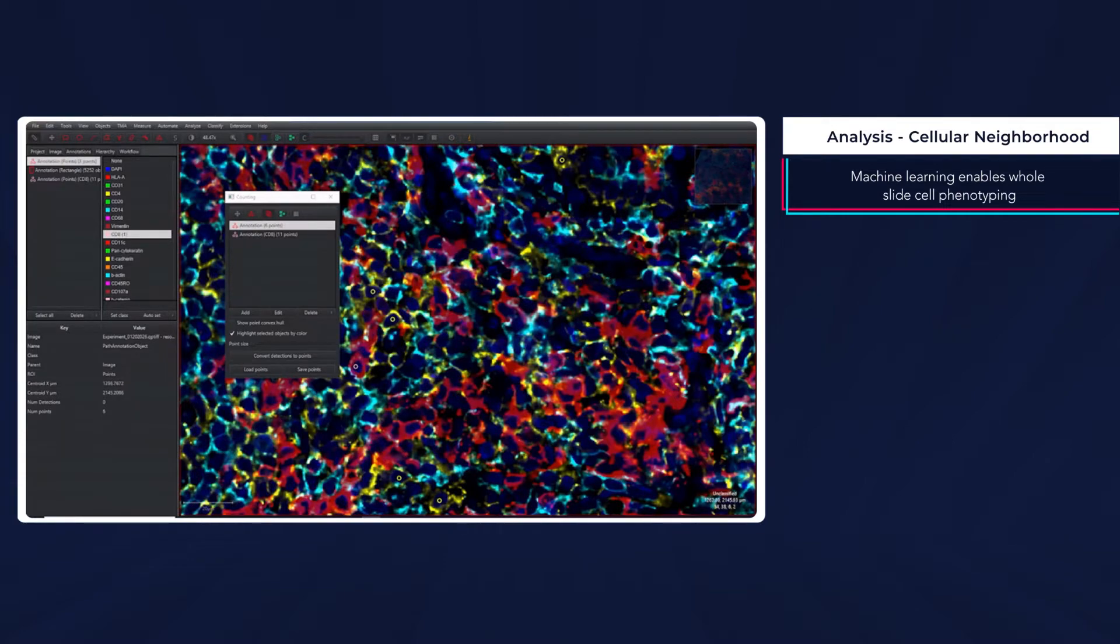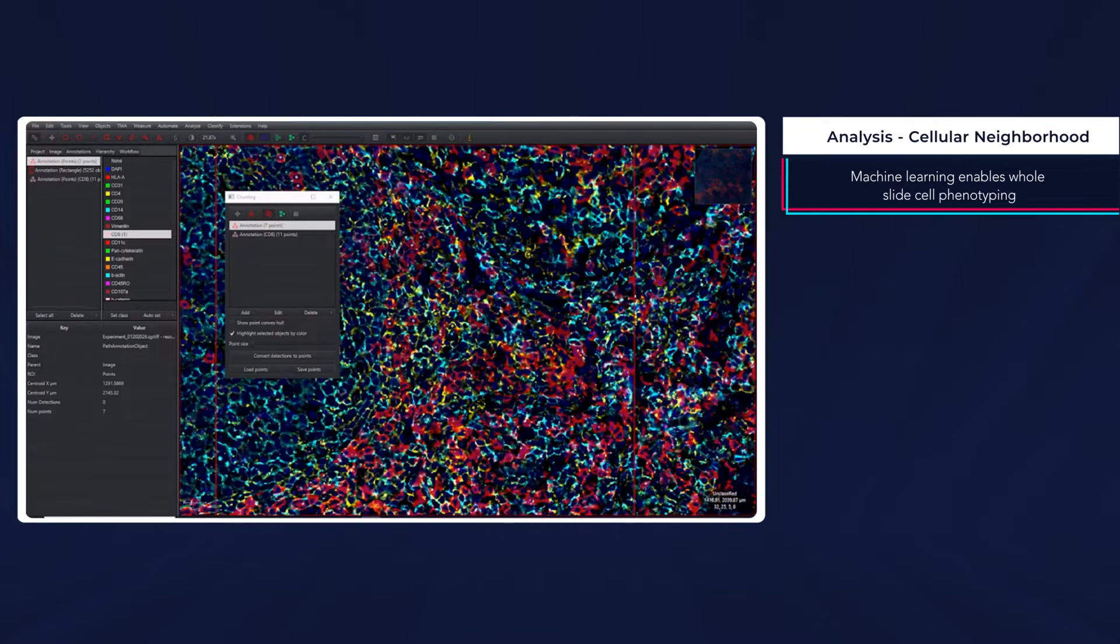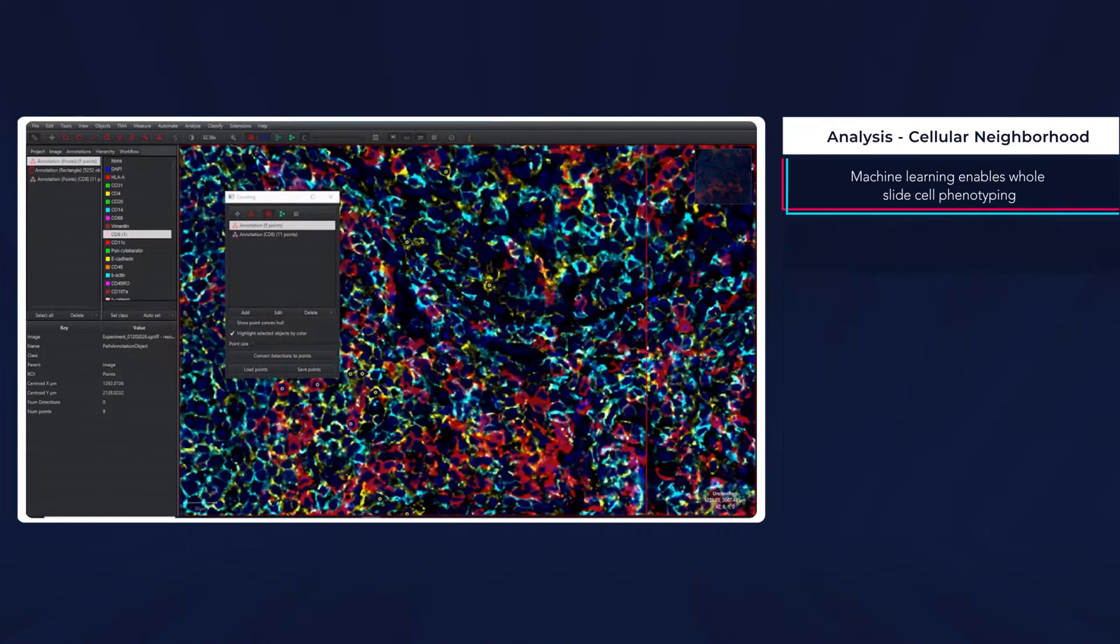Morphology and biomarker expression data can be cumbersome. However, cell classification and clustering algorithms can be leveraged to identify cell populations of interest, expediting hypothesis-driven experiments.